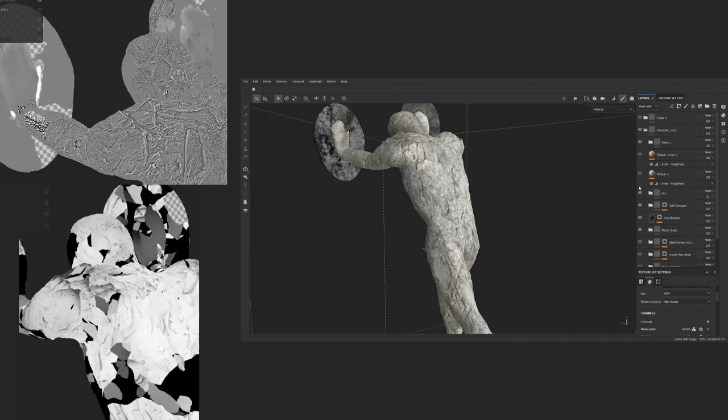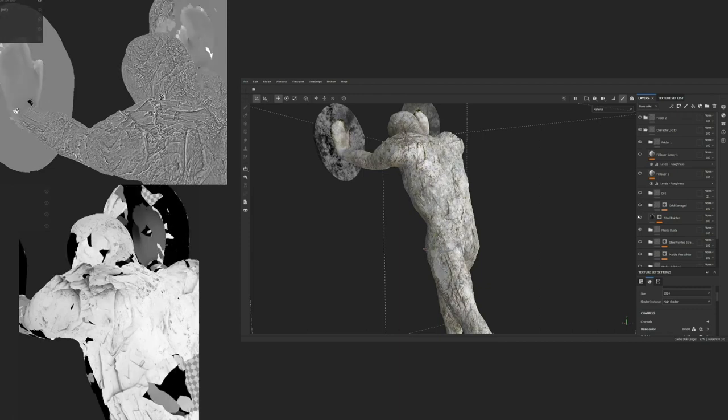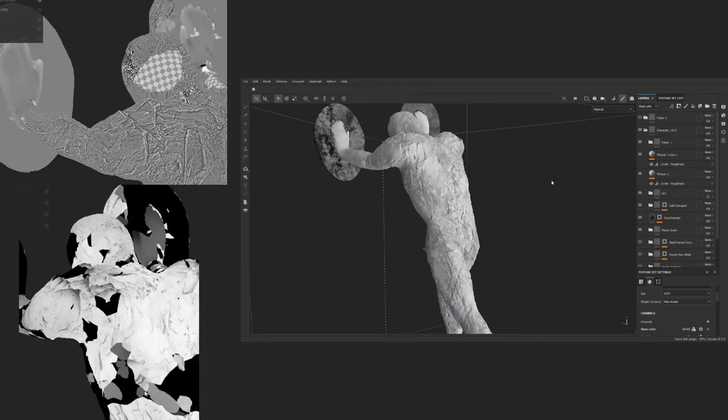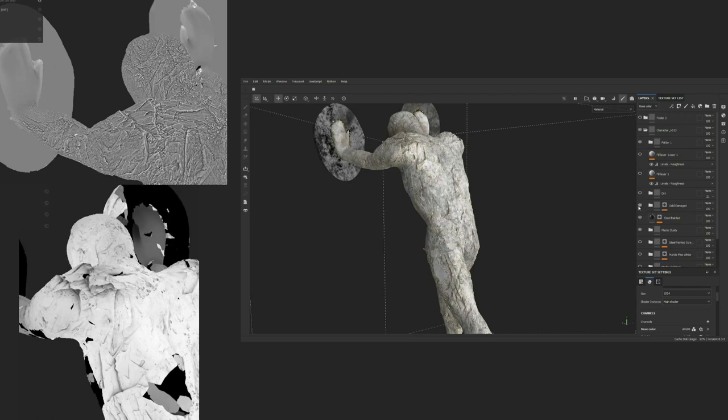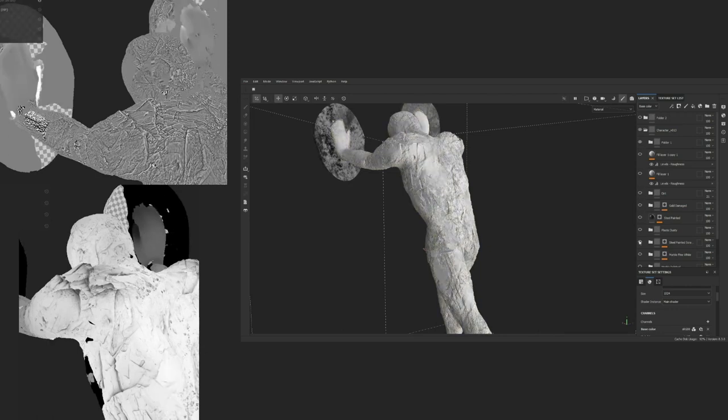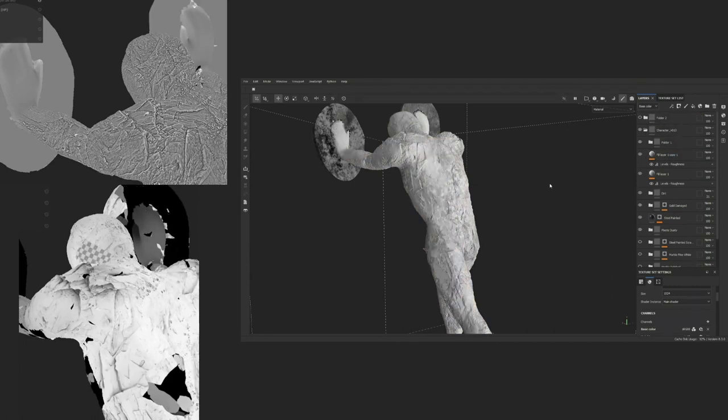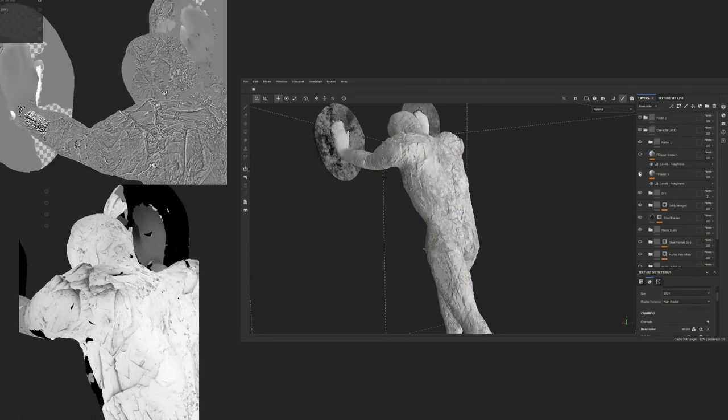In Substance, the texture setup was procedural, so if Jakob wanted to change his fractures or change his simulations, I would just re-UV it and then bring it back into Substance, and we would get the same look again. That way we're not blocking each other - he doesn't have to wait for me in one place, and he can carry on with his thing, and same for me.